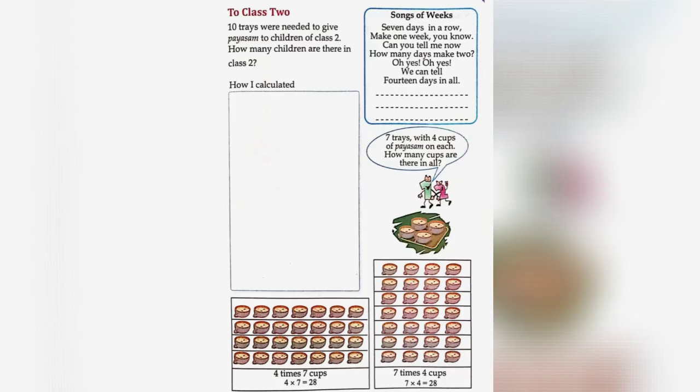For class 2, 10 trays were needed to give Paisam to the children. How many children are there in class 2? As you know, there are 7 cups in each tray, so we multiply 7 into 10, which equals 70.